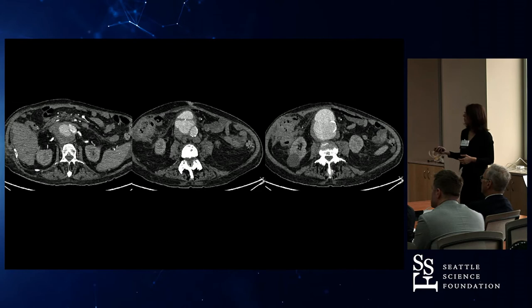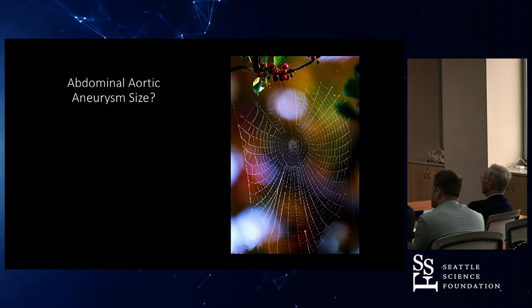Here's the question: what's the size of an abdominal aortic aneurysm? Three centimeters. See, it looks easy.